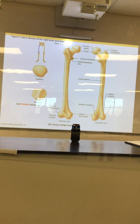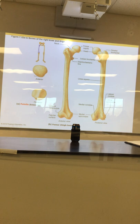Where is the patellar surface? Always on the front. So that's the front, and there's where it connects to the pelvis. The trochanters are on the back, the patellar surface is on the front — so this is a right leg. There's the head, there's the patellar surface on the front — that is clearly a right leg.